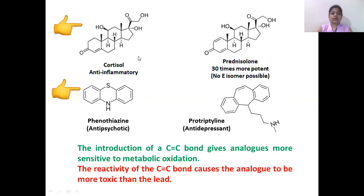An example is cortisol and prednisolone. Cortisol is the parent compound and prednisolone is its analog. The structures are essentially the same with one slight difference: a second double bond is introduced in prednisolone. With the incorporation of this double bond, prednisolone is 30 times more potent than cortisol. Both are anti-inflammatory, but prednisolone is 30 times more potent.